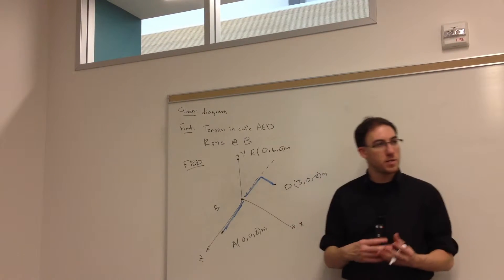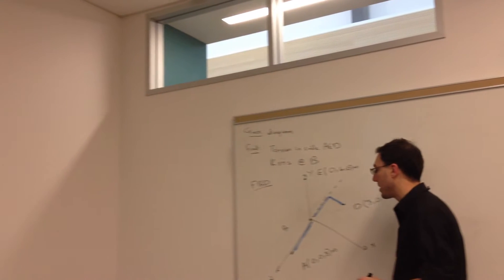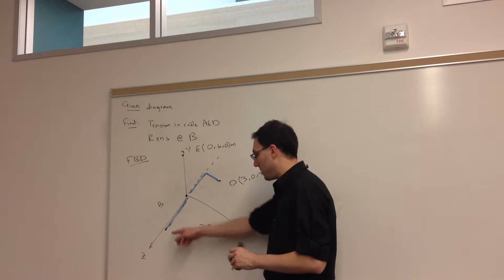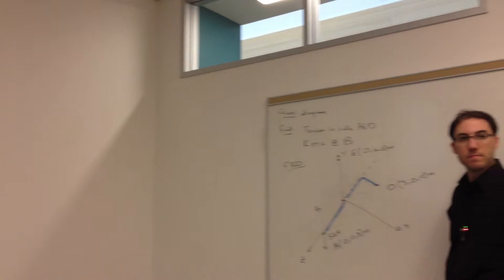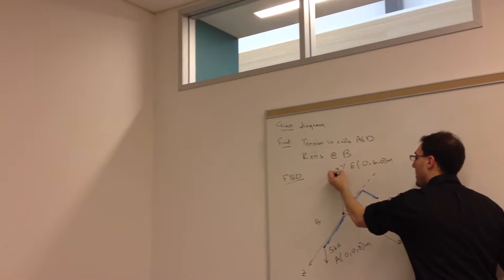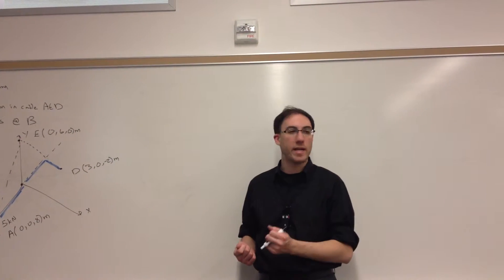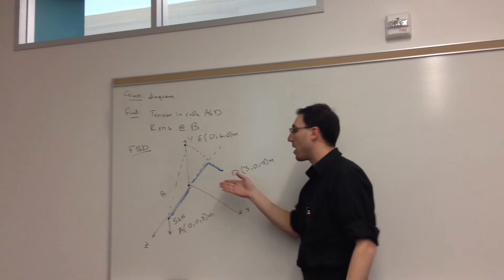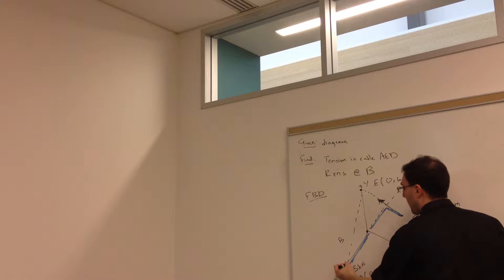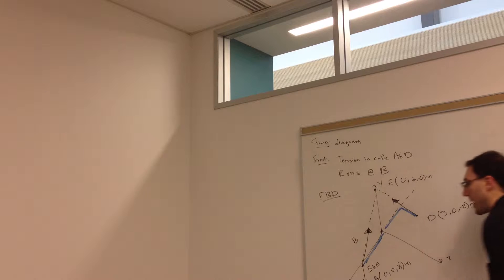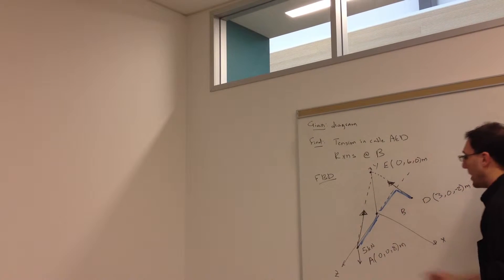I have the skeleton of my object dimensioned with all the important points and lengths. Now I want to include all of the forces and couples that act on the object. Usually I like to start with any external forces. At A, there's a 5 kilonewtons force in the negative Y direction. I'm disconnecting the object from the rope from A to E to D, so I have to put on what the rope does to my object.